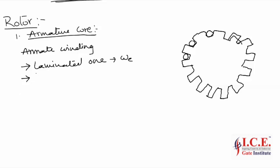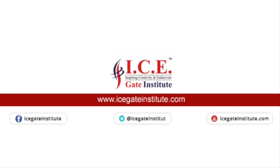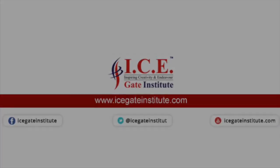The armature winding is of two types: lap winding or wave winding. The armature winding is made up of copper wire.